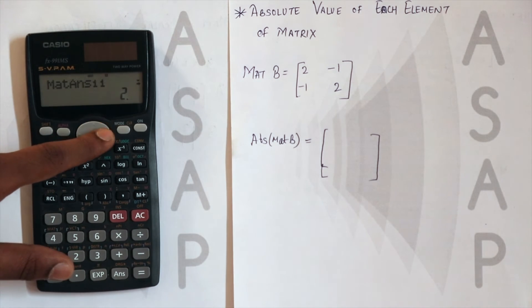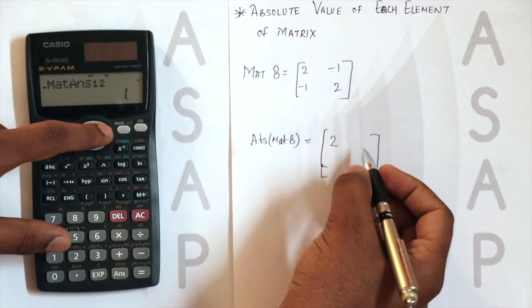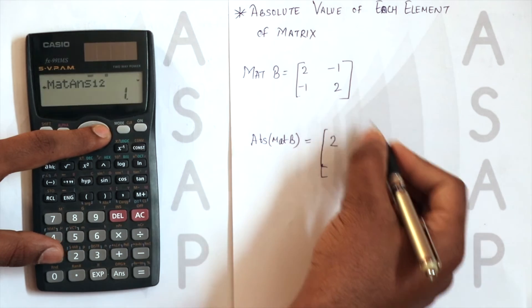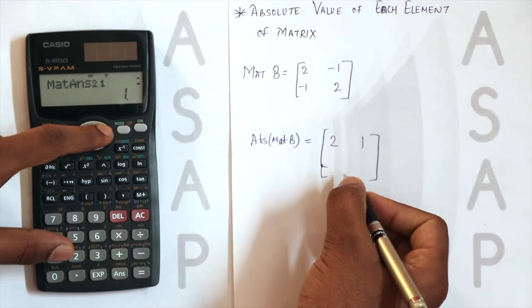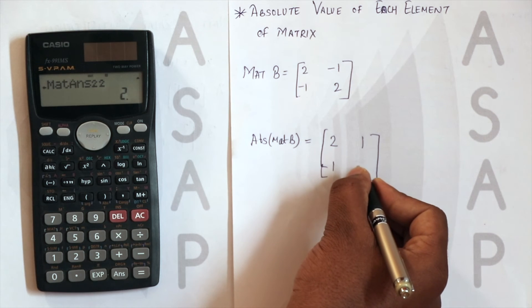You get the first row first element as 2, first row second element 1, second row first element 1, and second row second element as 2.